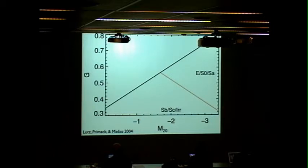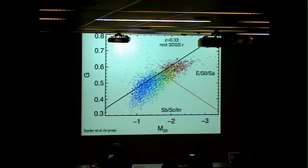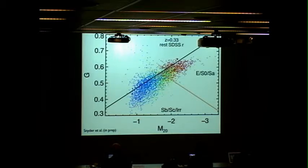At roughly redshift zero, Illustris simulation galaxies look like this. This is the first few thousand images analyzed at a redshift of 0.33 in SDSS R-band, colored by U minus B optical color — basically a measure of star formation rate. The galaxies separate nicely into ellipticals and spirals and possibly even some merger candidates in the upper left.